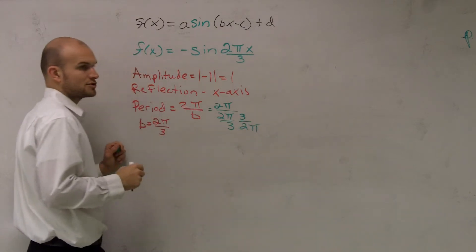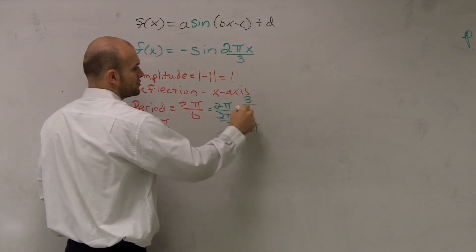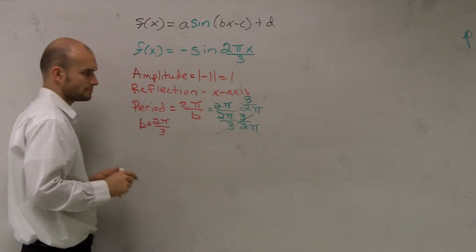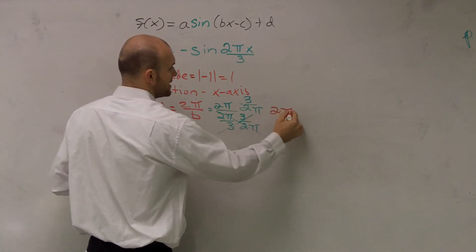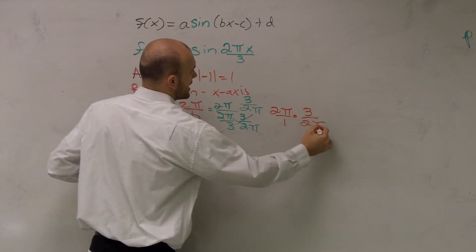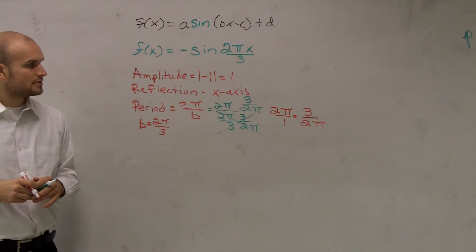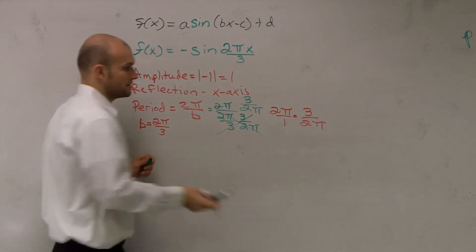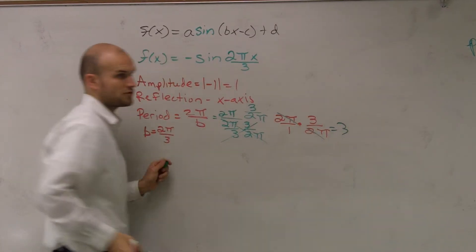Which would be 3 over 2 pi. That now cancels out. Then I have to multiply by 3 over 2 pi at the top. And essentially what we have is 2 pi over 1 times 3 over 2 pi. So what you guys can see here is now these are going to cancel out. So you're just left with 3.